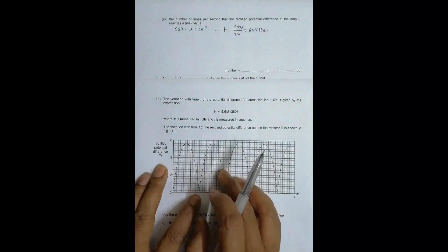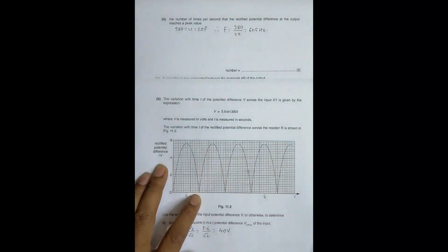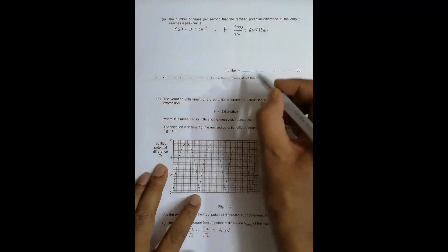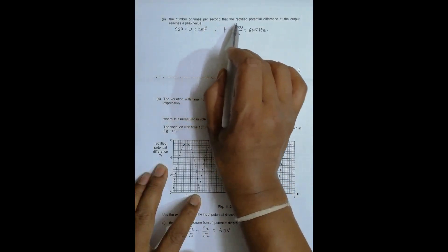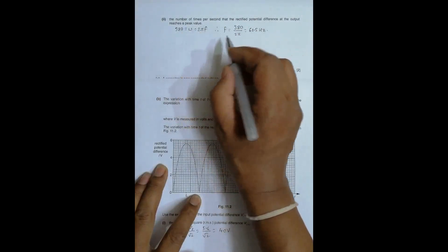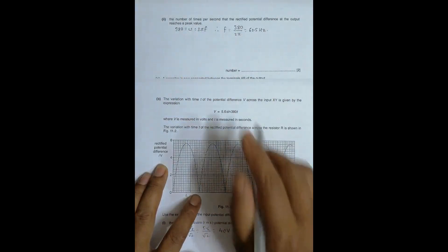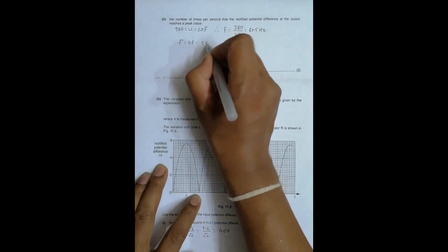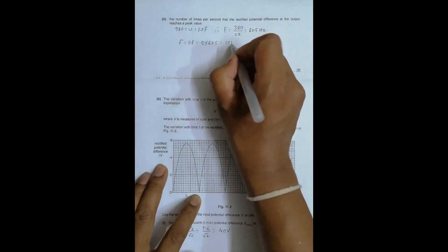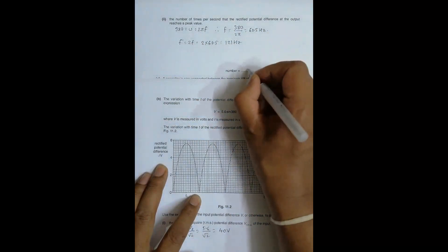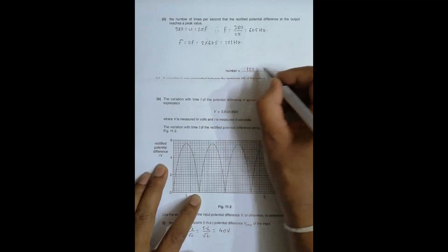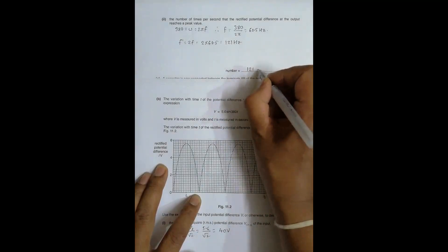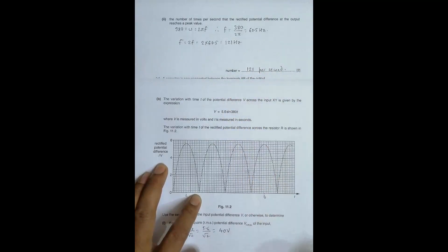Thus rectified output has its frequency double because it reaches peak twice faster than the input. So here the number of times per second that the rectified PD at the output is a peak value means that is the frequency of the rectified output and it's equal to twice f. So this f prime is equal to twice f and that's equal to 2 into 60.5 and that's equal to 121 hertz. So it is 121 hertz or simply 121 per second.